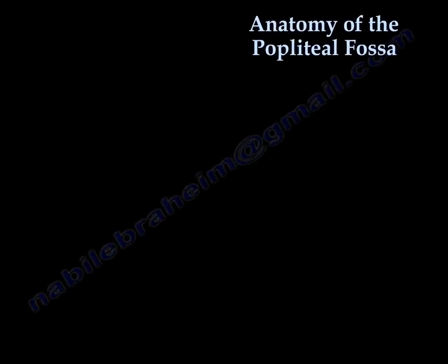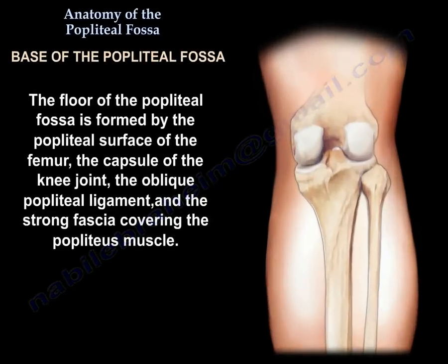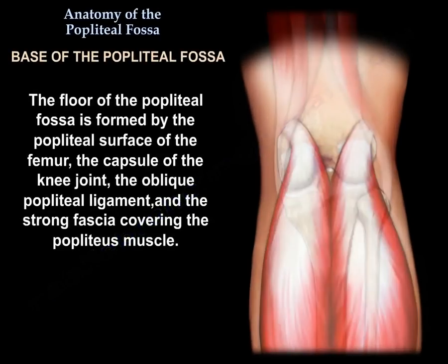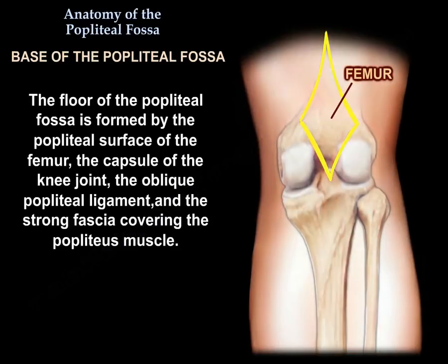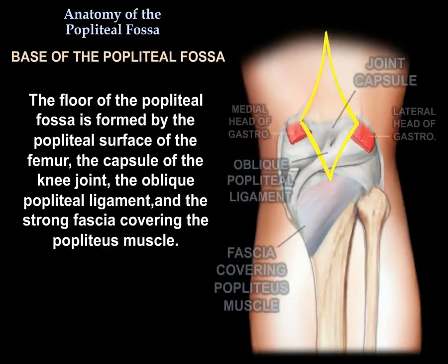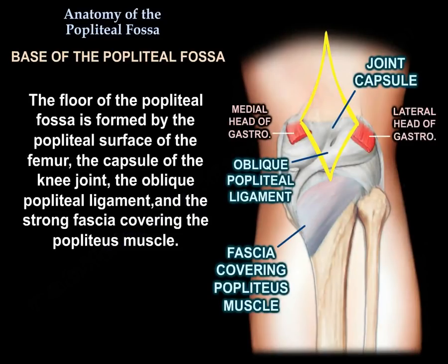The floor of the popliteal fossa is formed by the popliteal surface of the femur, the capsule of the knee joint, the oblique popliteal ligament, and the strong fascia covering the popliteus muscle.